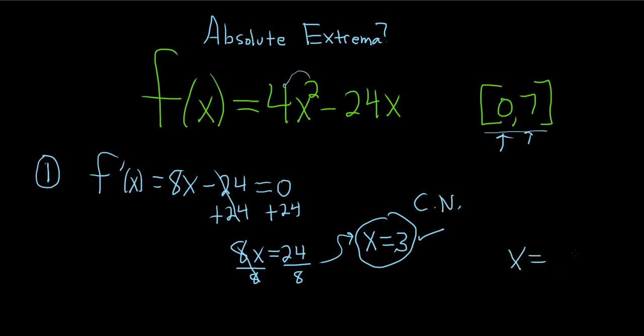So, like, if we would have gotten, like, x equals 3 and 10, then you would cross out the 10. You would not include that. It's got to be between 0 and 7.